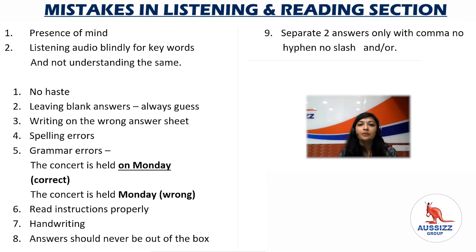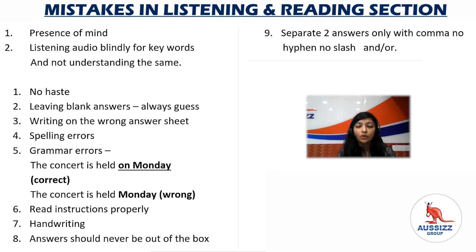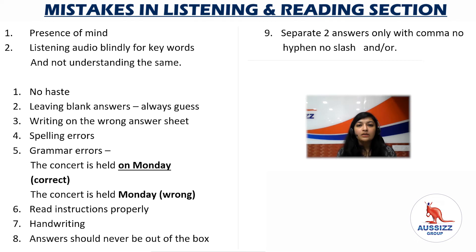The sixth instruction is to read instructions carefully before transferring your answers. Check how many words you are permitted to write. Your question may say 'not more than one word', or 'not more than one word and/or a number' — if a number is not mentioned, you cannot write a number. If the instruction is 'not more than two words' and you write three words, it's wrong. But your answer can also be one word — it doesn't have to be two. In multiple choice, write only A, B, or C; in map questions, write the required alphabets or words as instructed.